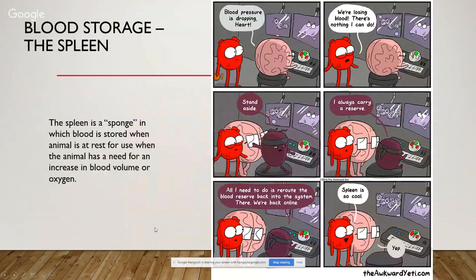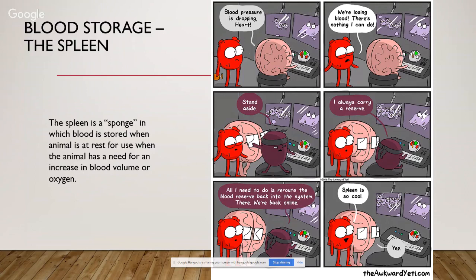For blood storage, the spleen is our sponge in which blood is stored when an animal is at rest, for use when the animal has a need for increased blood volume or oxygen. When the brain detects dropping blood pressure, the heart can only pump what's in the body, but the spleen jumps in with its reserve and reroutes that blood reserve back into the system. The spleen holds on to reserves and releases them when the body is under attack or under stress.